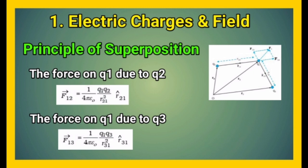by F12 equals 1 upon 4 pi epsilon naught Q1 Q2 upon R21 square into R21 cap. Similarly,